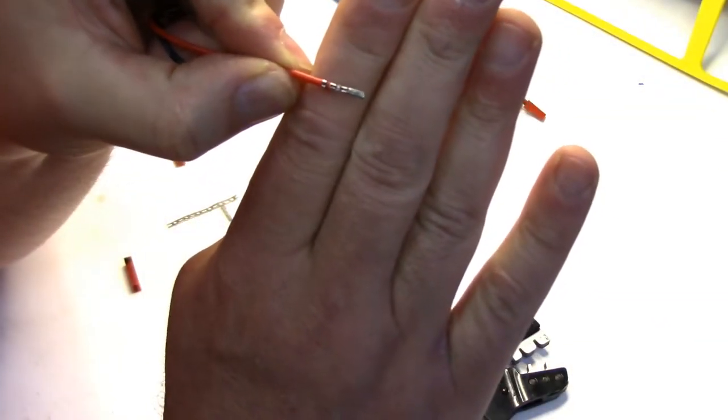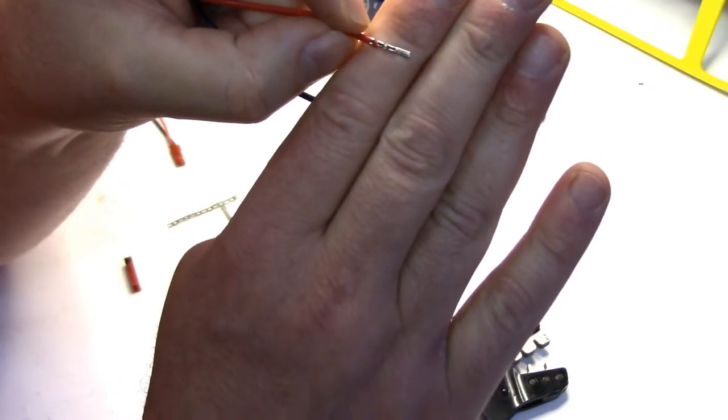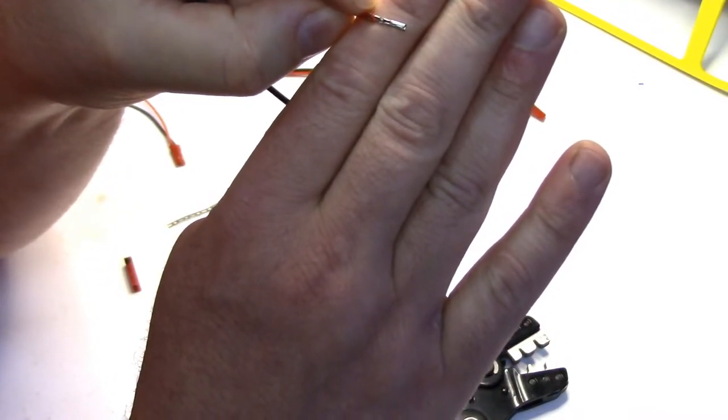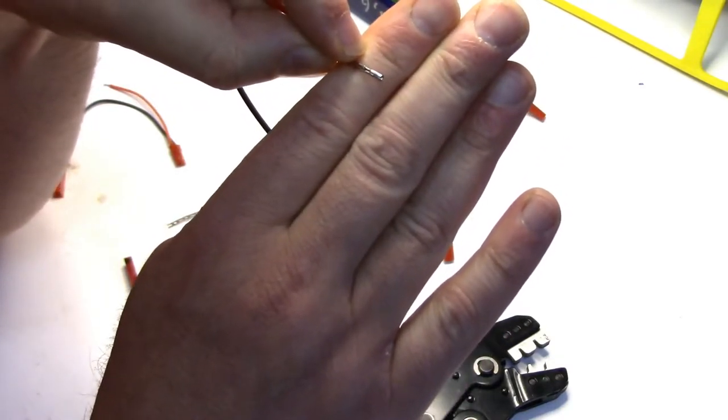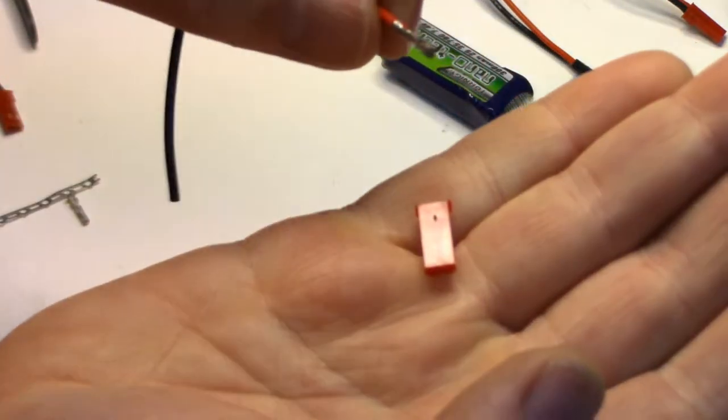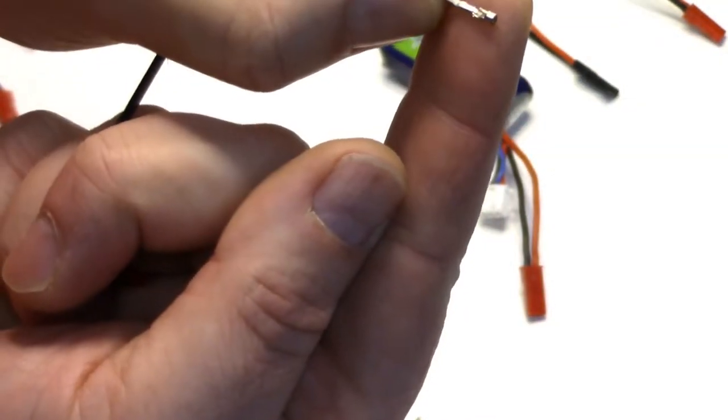So that's what you want to see. You want to see that outside crimp section grab the wire insulation and then the inside one is what's crimping down on the actual wiring.